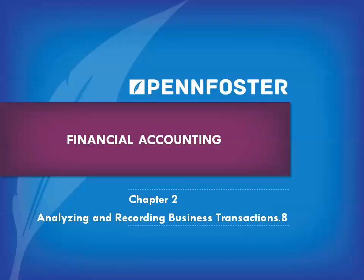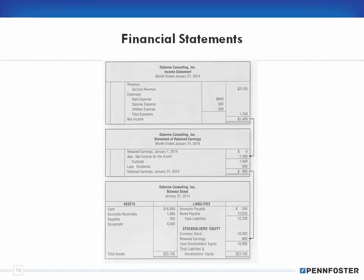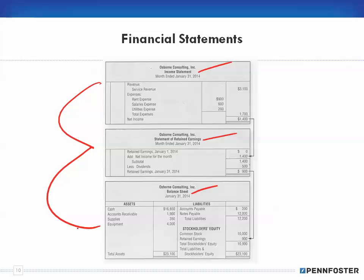Welcome back, students. We're working on the theory videos for chapter 2, which covers analyzing and recording business transactions. This is the eighth video in the series. We left off talking about the trial balance, and the next section is going to deal with the financial statements. I'm going to discuss the formatting of the income statement, the statement of retained earnings, and the balance sheet, and show the relationship between these financial statements.